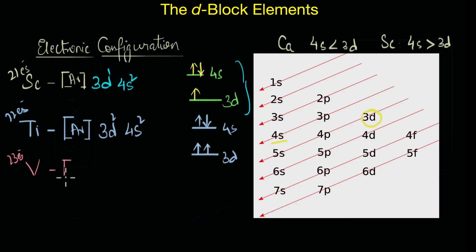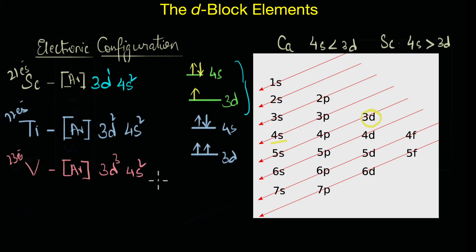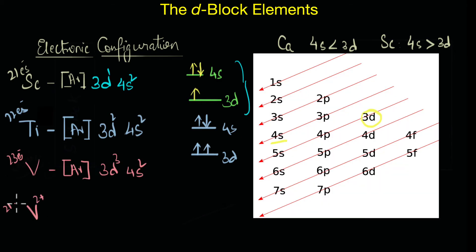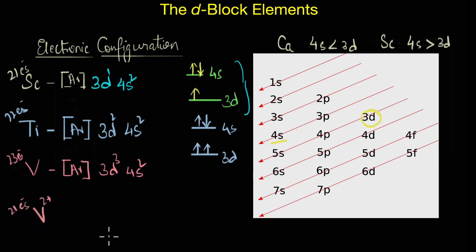Similarly, vanadium with 23 electrons has the electronic configuration [Ar]3d³4s². Now here's a question: while forming ions, from which orbital do the electrons get lost? For example, if you have V²⁺ with 21 electrons, does the electron leave from the 4s orbital or from one of the 3d orbitals?